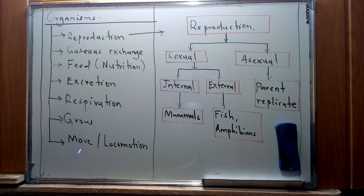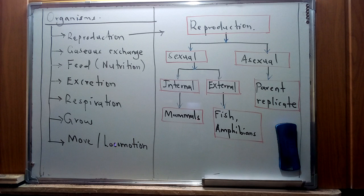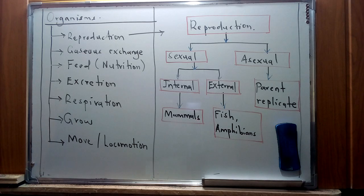Living organisms grow, which implies an increase in mass and size of the body or organs. Lastly, there is movement or locomotion — for plants, parts of the organism can move without the whole organism changing position. For animals, locomotion involves a change of position from one place to another, maybe in search of mates or food. These are the key characteristics of living organisms that we'll rely on as we move ahead in biology.